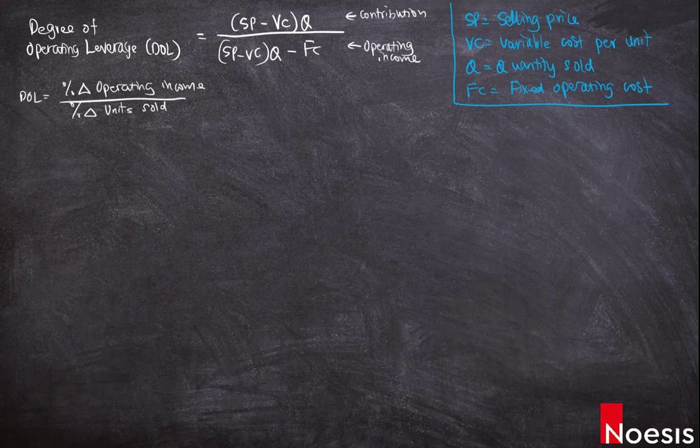I'm going to make an assumption that initially the company is selling Q₀ units and they're going to increase production to Q₁ units, and that's the number of units they're going to sell.